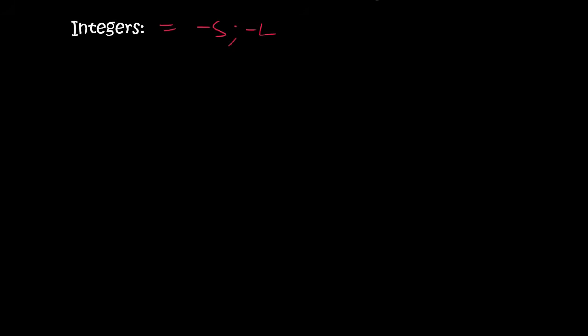So to define it, I'm just going to say that integers are numbers like minus 5, minus 4, minus 3, minus 2, minus 1, 0, 1, 2, and 3, and so on and so forth.